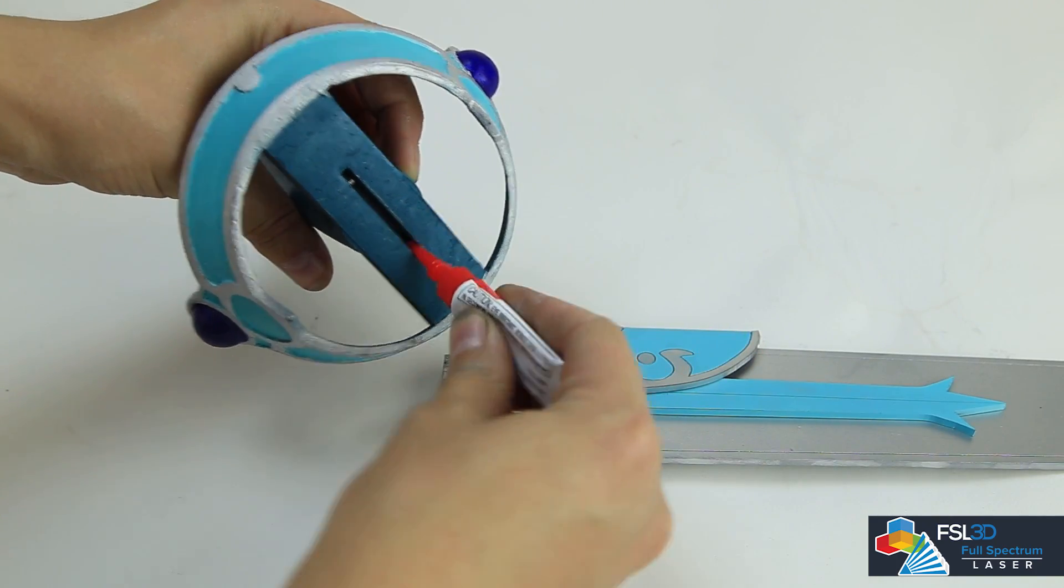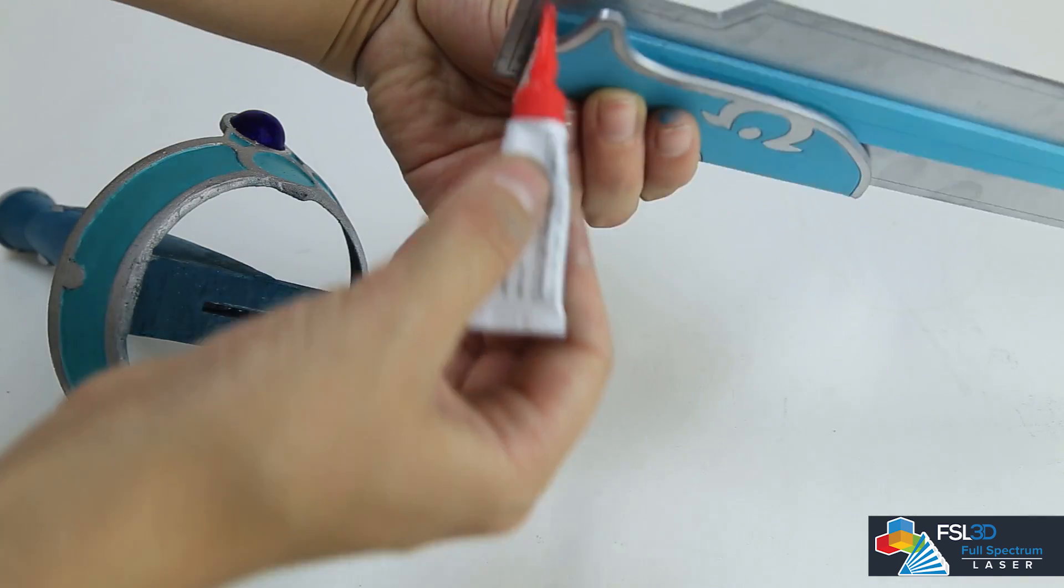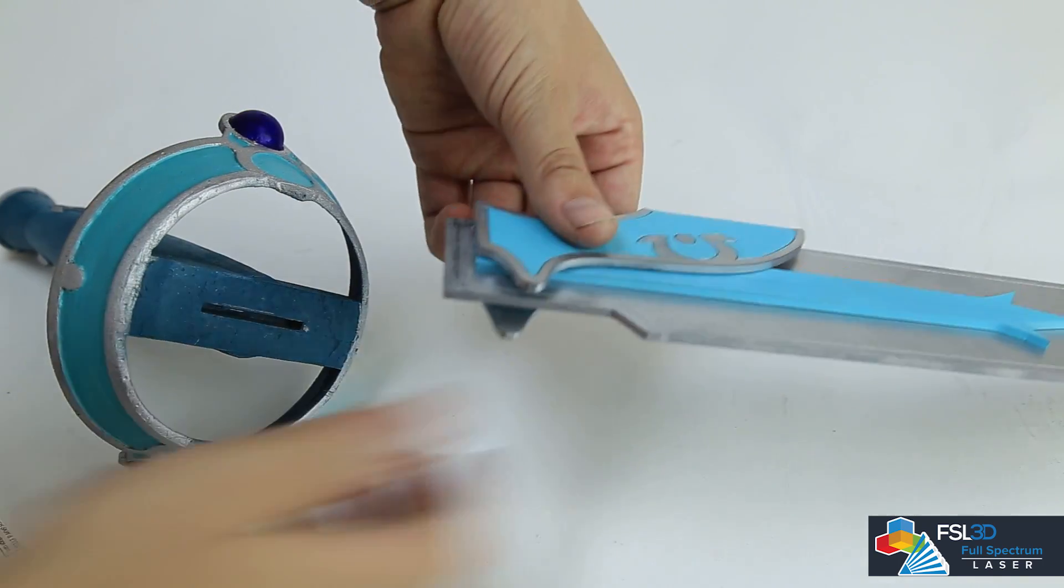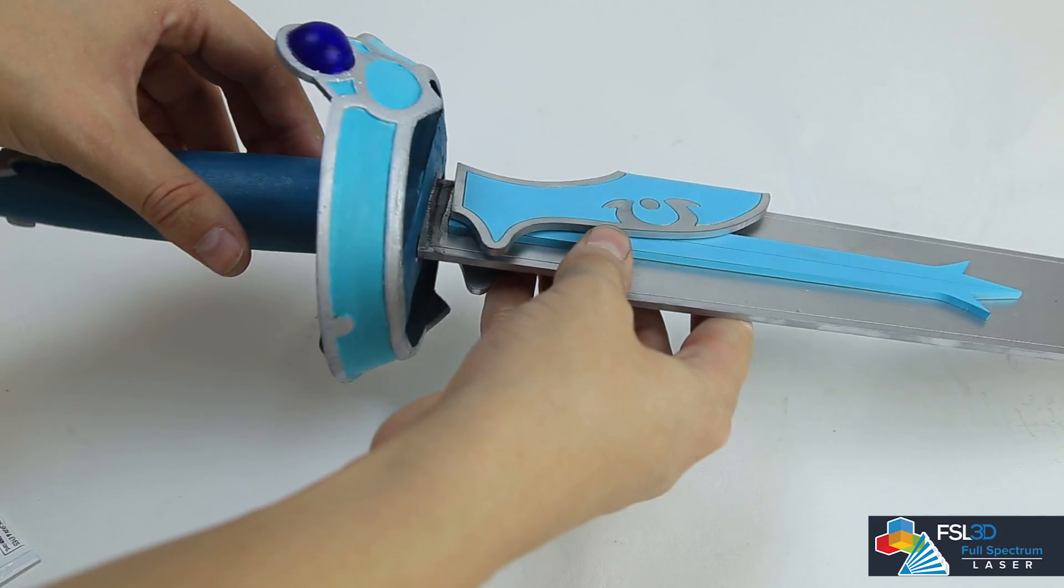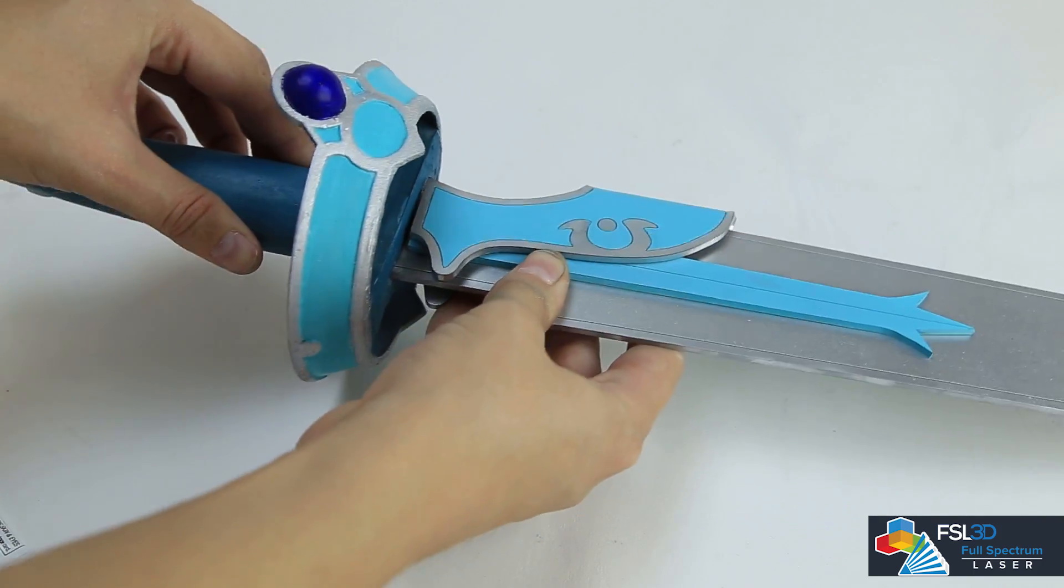Add glue to the inside of the handle and on either side of the exposed blade tab. Slot the pieces and wait until dry.